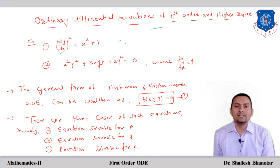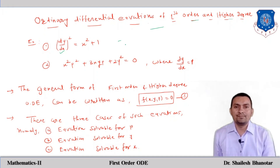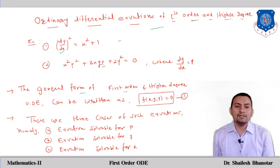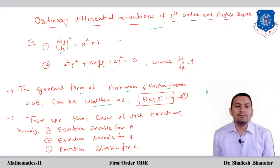This kind of equation is known as a non-linear differential equation. There are specific methods to solve such equations, which we are going to discuss in this topic. Another example is x squared p squared plus 3xy p plus 2y squared equals 0, where p is dy/dx and the degree is 2. The general form of a first order and higher degree ODE can be written as f(x, y, p) = 0, where p = dy/dx.